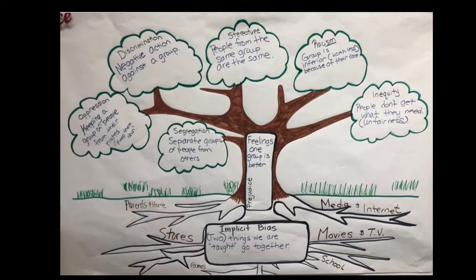If students are to have intellectual conversations about race and the issues surrounding it, it's important for them to understand the vocabulary needed to have those conversations. This tree is an example of an activity I do with my students so they can understand different words and how they relate to racism.